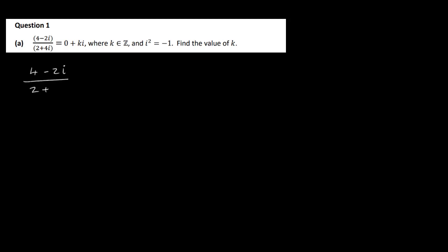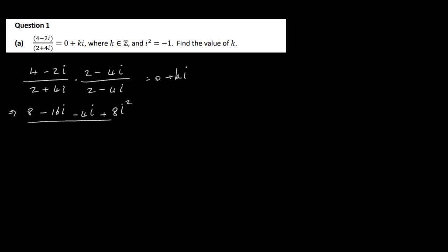So if we have 4 minus 2i over 2 plus 4i, I'm going to multiply by the conjugate of the denominator over itself — that's 2 minus 4i over 2 minus 4i. And we know that that's going to be equal to 0 plus ki.